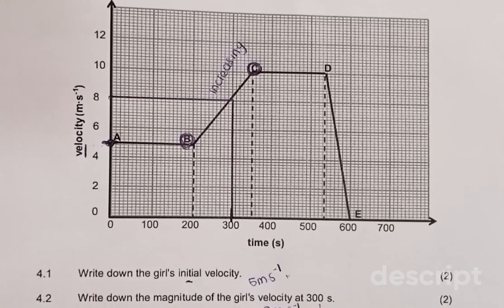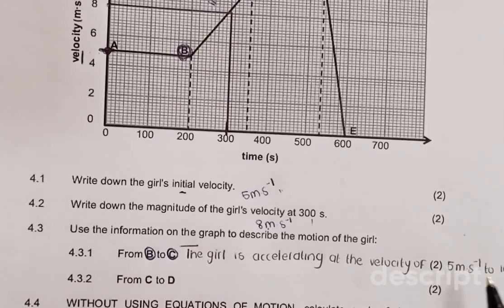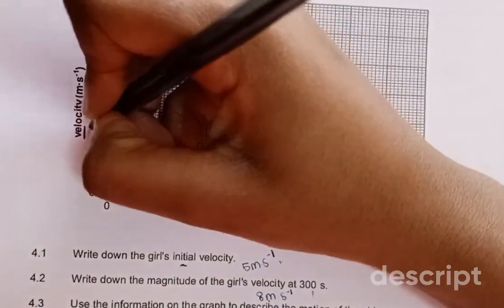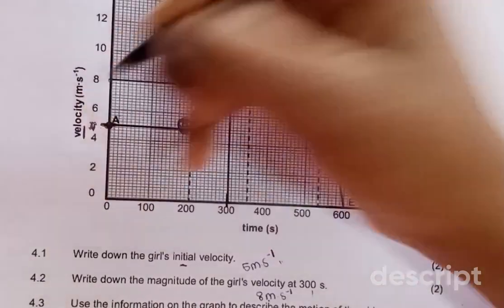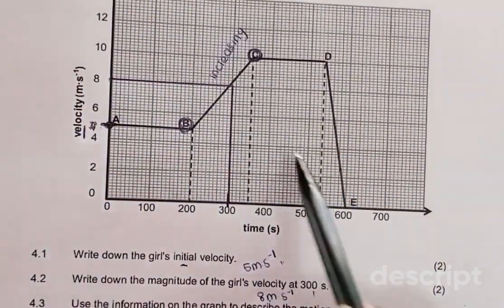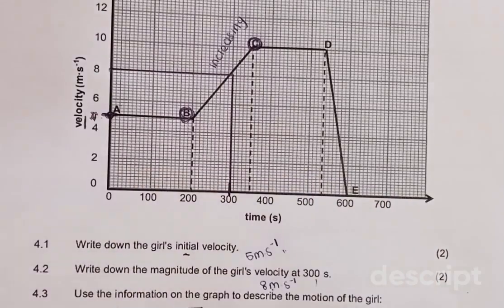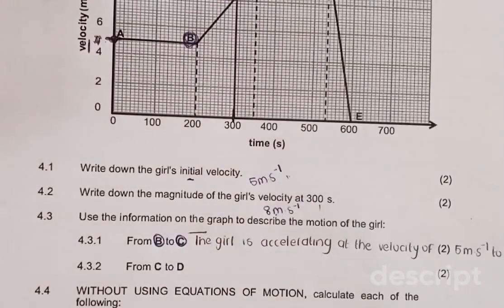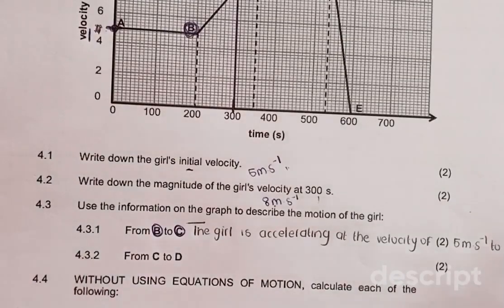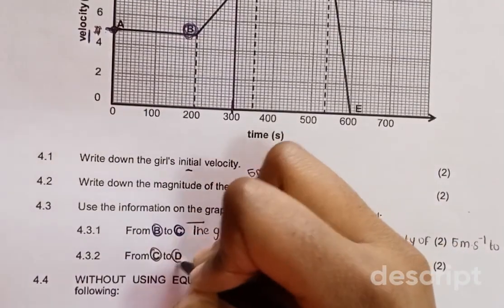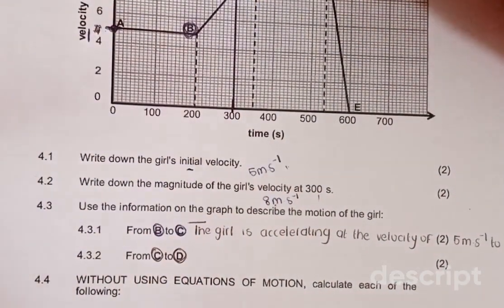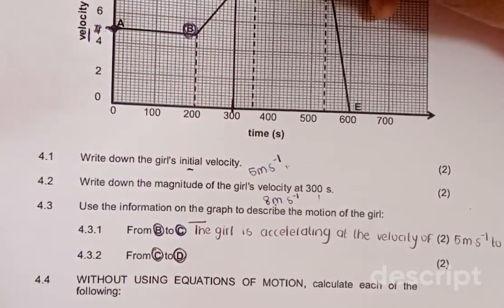When you get a graph or grid like this, be very careful when stating the values — for instance, this might be 4 or 8. You must always use your ruler so that you can get the correct numbers on your y-axis. Now we look at 4.3.2, from C to D. What is happening from point C to D? We immediately know that this is constant velocity.